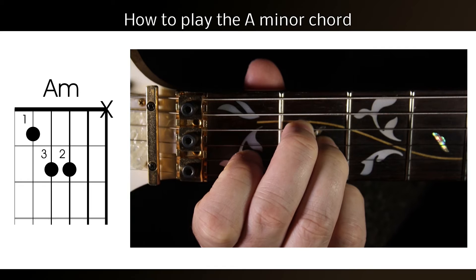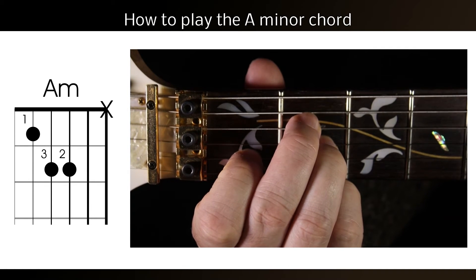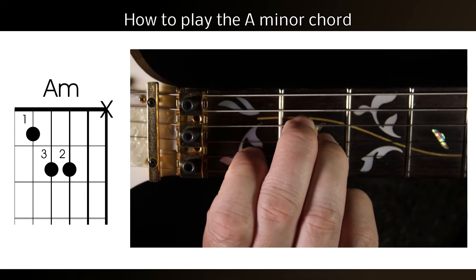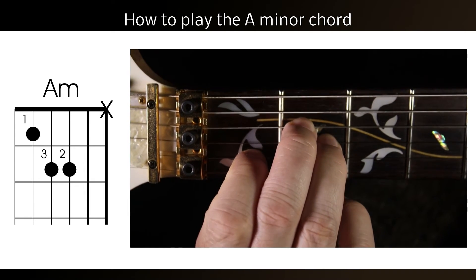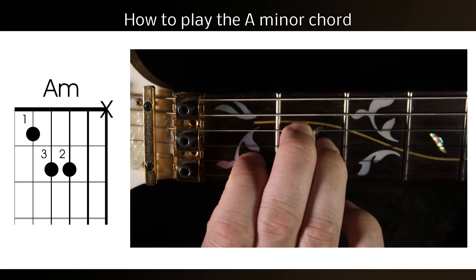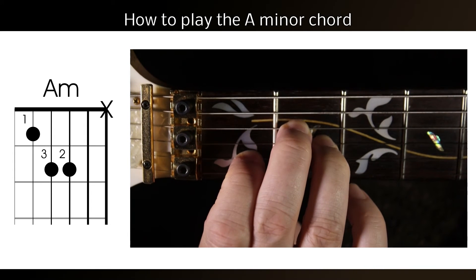If it's an open string that's sounding muted, that means one of your fingered strings is overlapping, so you need to bring it up onto its tip. This might involve bringing the thumb down the back of the neck. By doing this, it automatically brings the fingers onto their tips.